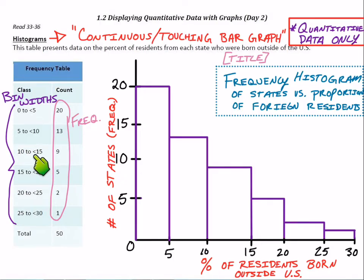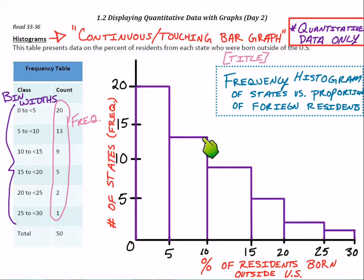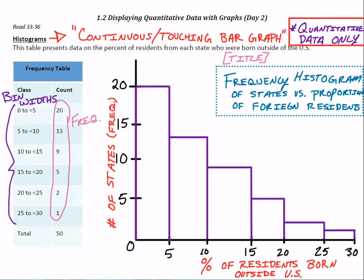If you had exactly 10%, you would have to go in the 10-to-15 bin, because the 5-to-10 bin takes everything up to but not including 10. So if I was at exactly 10, it would have to be in the 10-to-15 bin, because that bin includes 10 whereas the previous one does not.